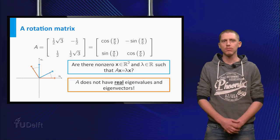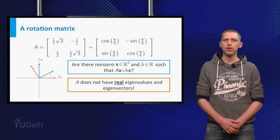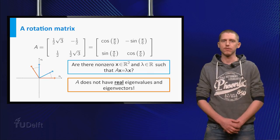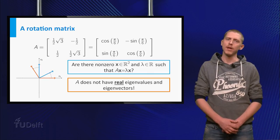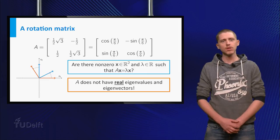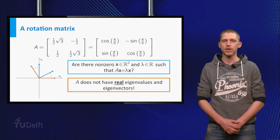So you have no option but to conclude that A has no real eigenvalues and eigenvectors. If A does not have any real eigenvalues, does it maybe have complex eigenvalues and eigenvectors?